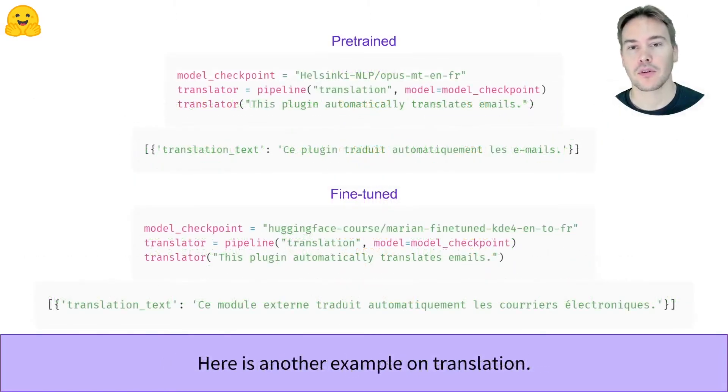This is another example on a translation task. On top, we use the pre-trained French-English model, and at the bottom, the version we fine-tuned in chapter 7.